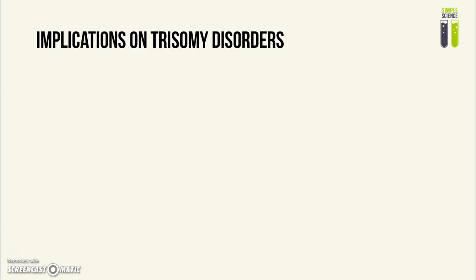Now this will have implications on trisomy disorders. For the sake of easy reference, we will use trisomy 21, or Down syndrome, for this example. An error in meiosis will cause one of the parents to have a gamete that contains two copies of chromosome 21. When this gamete fuses with a normal gamete, the zygote will have three copies of chromosome 21 — this is called trisomy 21.